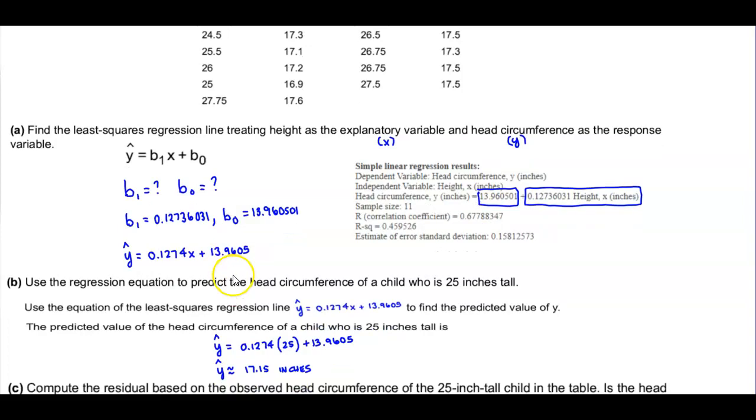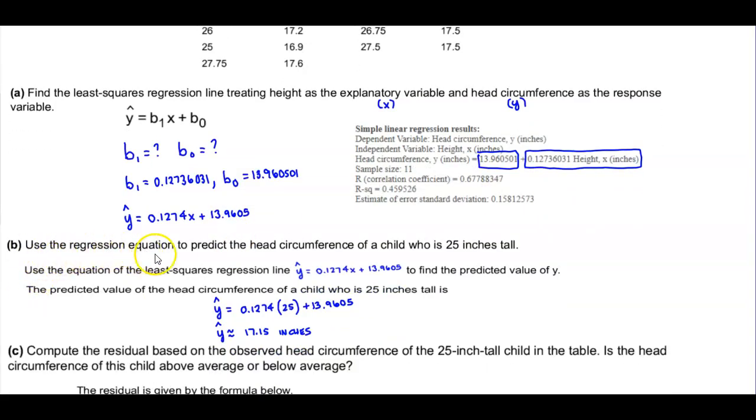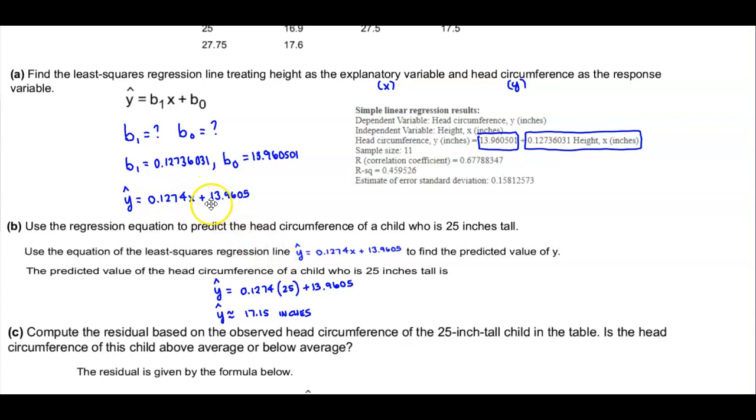Now next, now that we have the regression line, we can answer question B. It says use the regression equation to predict the head circumference of a child who is 25 inches tall. So we're going to use the equation of the least squares regression line, which we found here in part A, Y equals 0.1274X plus 13.9605, to find the predicted value of Y. So the predicted value of the head circumference of a child who is 25 inches tall means that X is going to be 25. We're going to take 0.1274, multiply it by 25, and then add 13.9605, and we get Y to be approximately 17.15 inches.